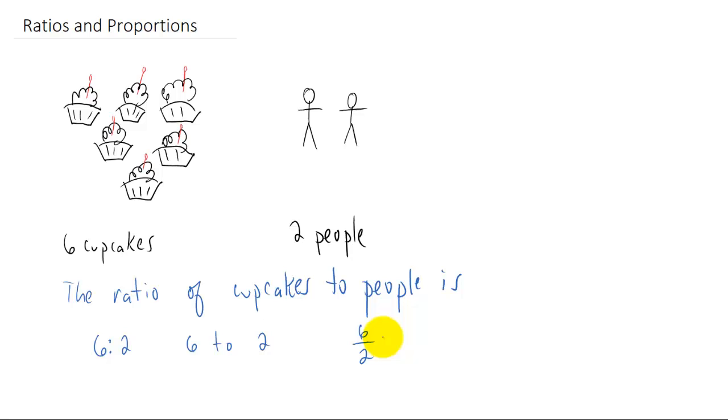And there are three ways that we can do this. One is with a colon. That's 6 colon 2. You read that 6 to 2. You can just write the English word to and write 6 to 2 as a ratio. Or you can say the ratio is 6 to 2 in a fraction.